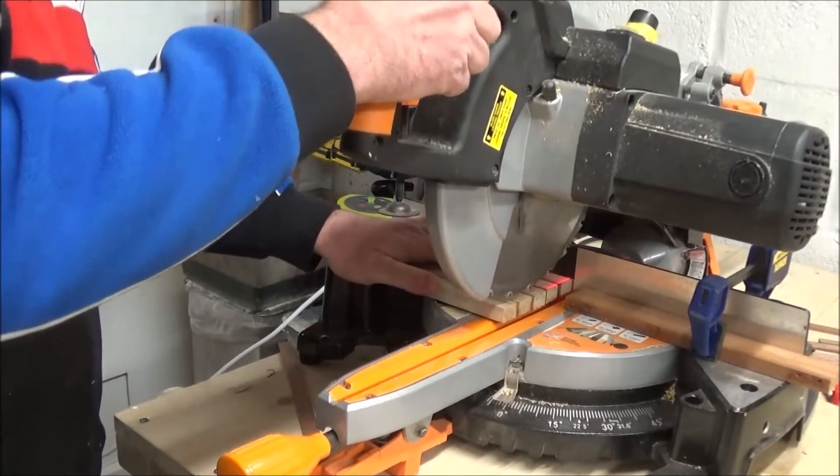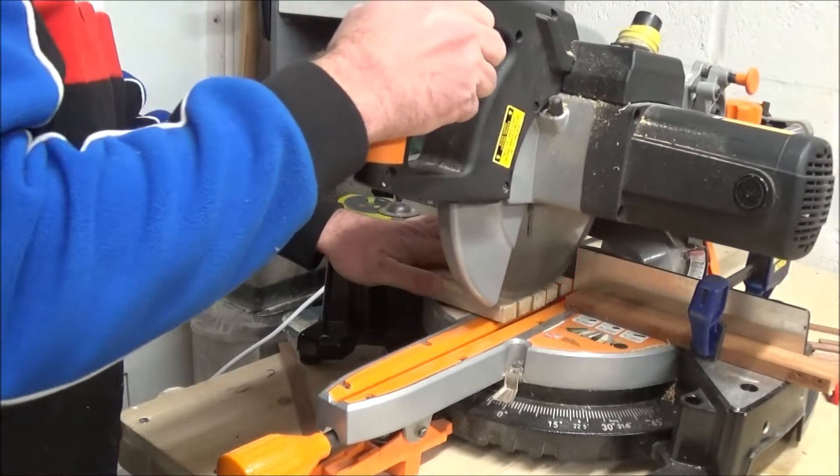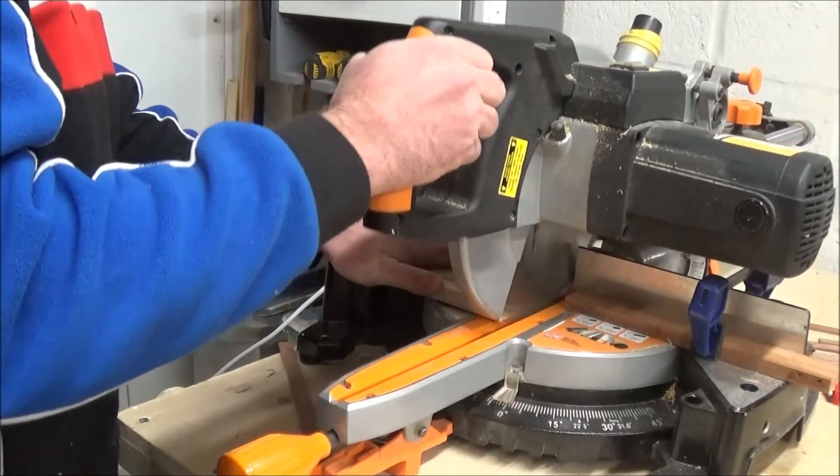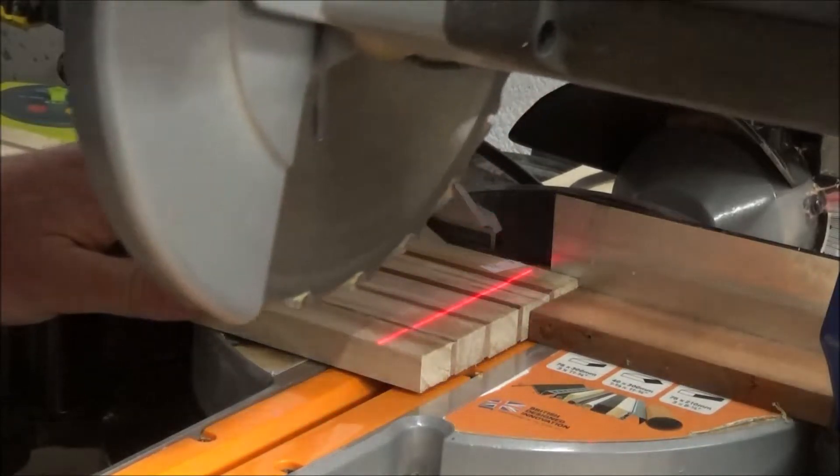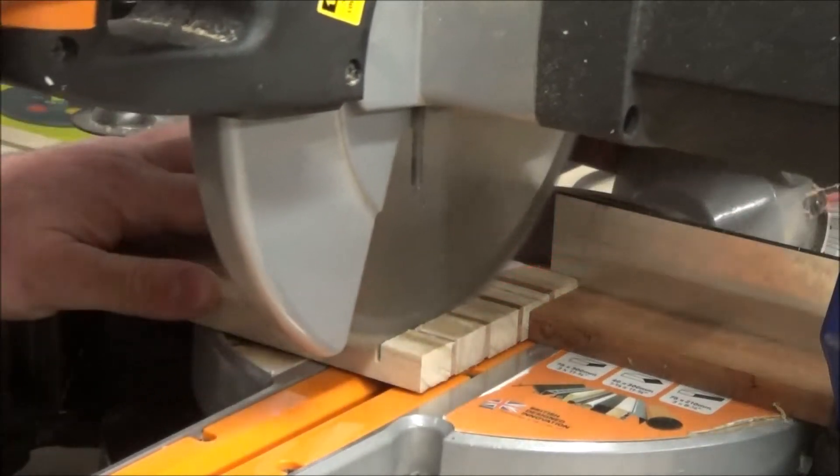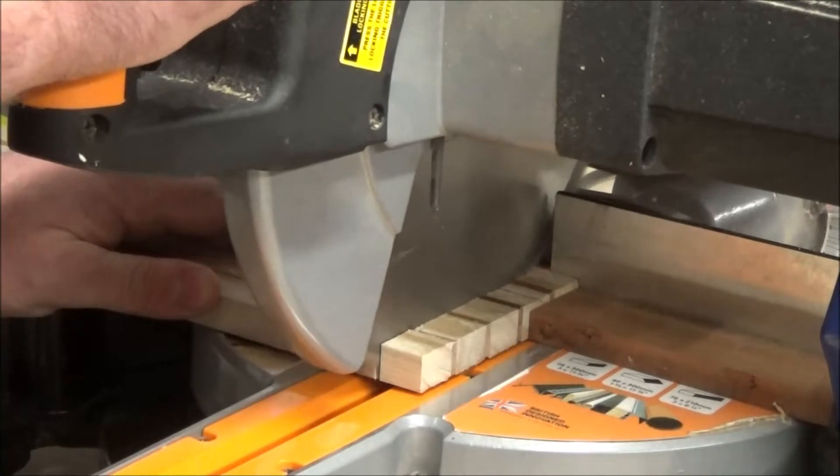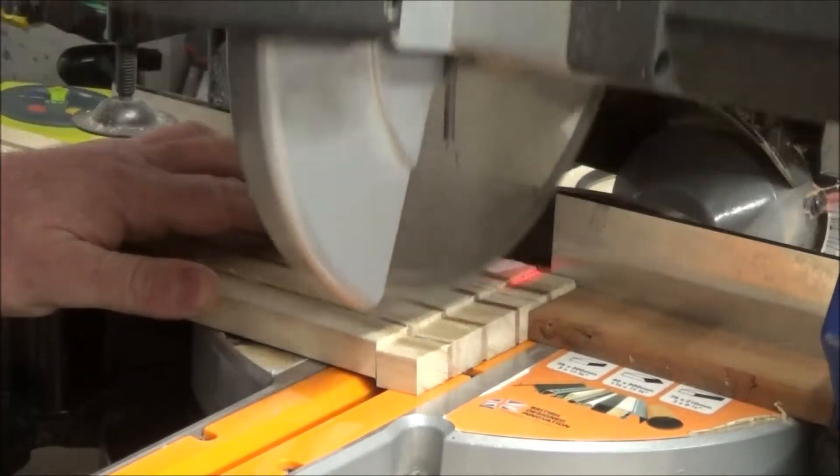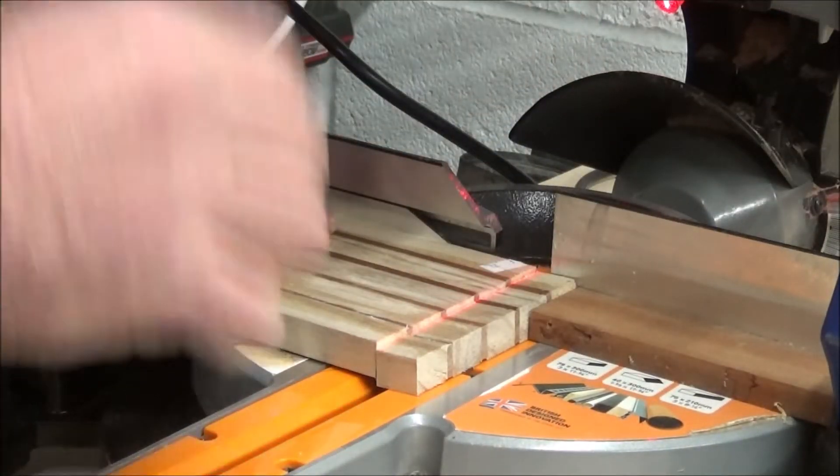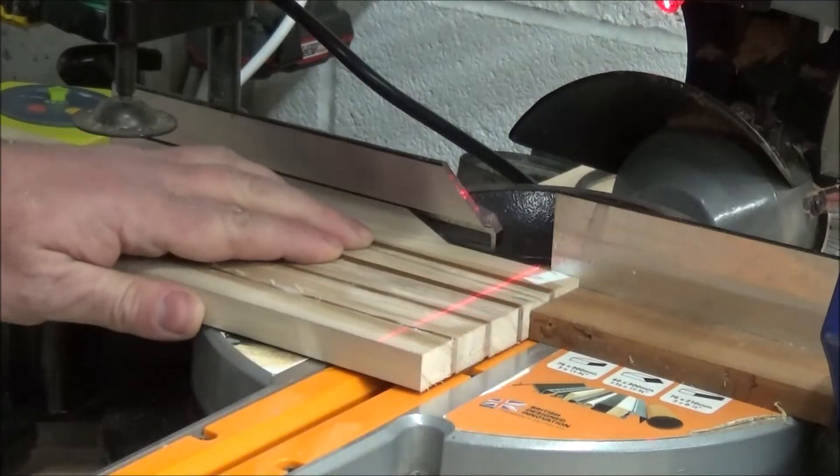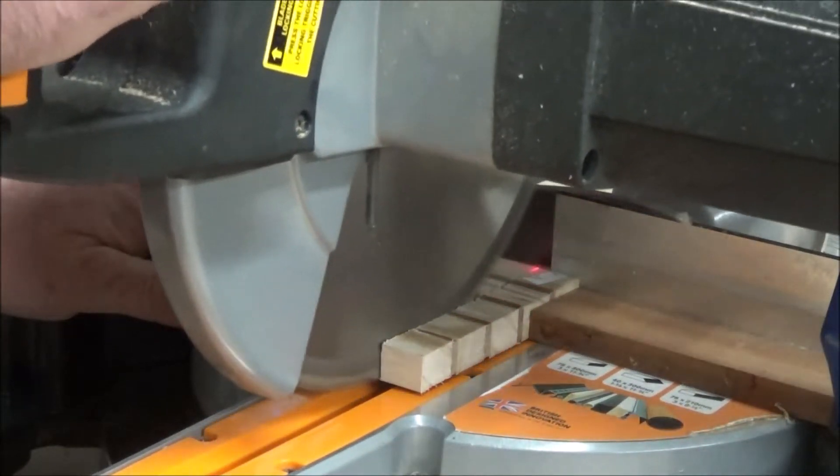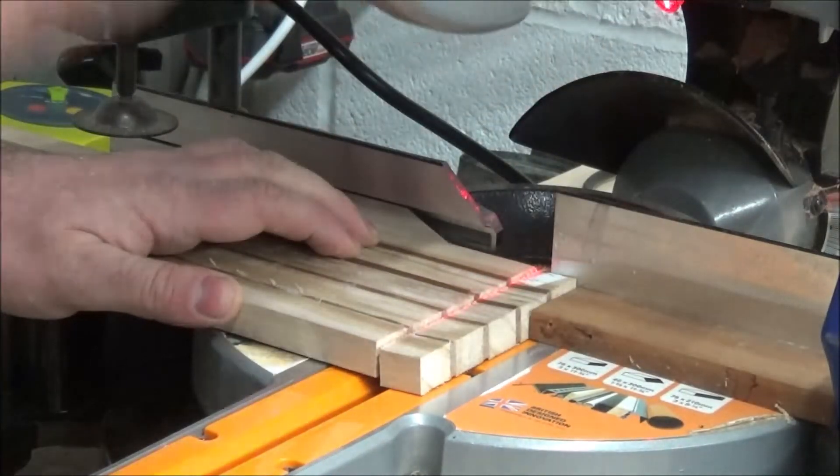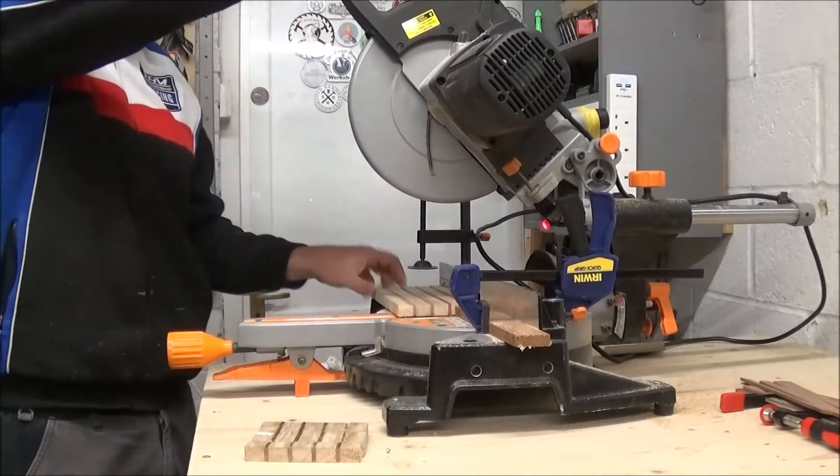Once it was dry, I came back to the mitre saw and cut off the end to square it up. Then I set a stop block in place and could slide the piece over to it and simply cut off the width that I required. As you'll see in a minute, I think my blade on the mitre saw could do with changing because it seems a little bit blunt, as I was getting rather a lot of tear out which I hadn't anticipated.